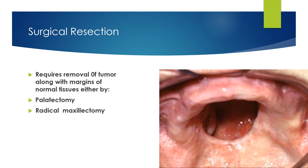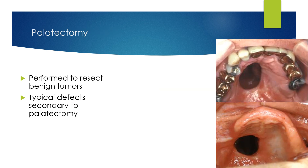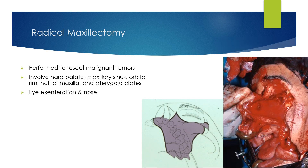Surgical resection requires the removal of the tumor along with margins of normal tissue, either by palatectomy or radical maxillectomy. Palatectomy is usually performed to resect benign tumors. Radical maxillectomy is usually performed to resect malignant tumors depending on the extent; the resection involves the hard palate, maxillary sinus, orbital rim, half of the maxilla, and pterygoid plates. Sometimes eye exenteration and total nasal resection are also performed.